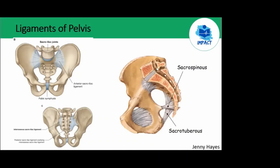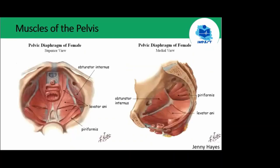The sacroiliac joint is also supported by three accessory ligaments: the iliolumbar, the sacrotuberous, and the sacrospinous ligaments. The notch above the ischial spine is the greater sciatic notch, and below is the lesser sciatic notch. The sacrotuberous ligament and sacrospinous ligament convert the greater sciatic notch into the greater sciatic foramen, and by extension the lesser sciatic notch becomes the lesser sciatic foramen. Therefore there are three exit points for the pelvis: the obturator canal, the greater sciatic foramen, and the lesser sciatic foramen.